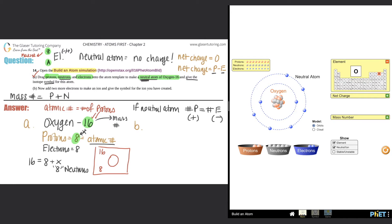Now they're saying add two more electrons to make an ion and give the symbol for the ion that you have created. Here, I'm going on my simulation. I add two more electrons. Now let's see—O, because we got to give the symbol. An ion is just a charged element or a charged atom, so it's got to have a charge in the upper right-hand corner. We just got to figure out what it is.